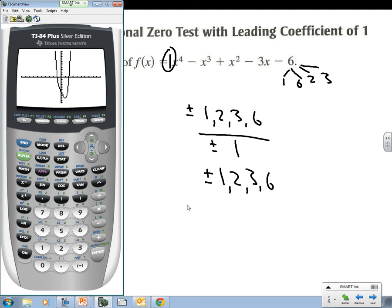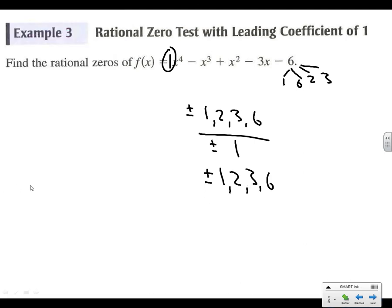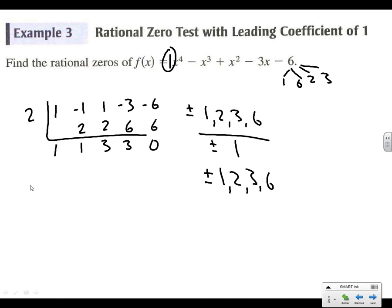I'm going to verify this with synthetic division — 2 on the outside. My coefficients are 1, negative 1, 1, negative 3, and negative 6. Running through the synthetic division, it is indeed a factor. So I know that x minus 2 is one of my factors.